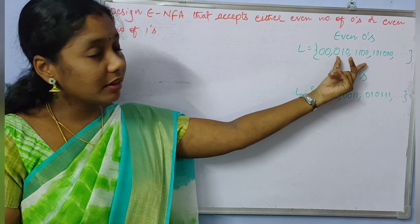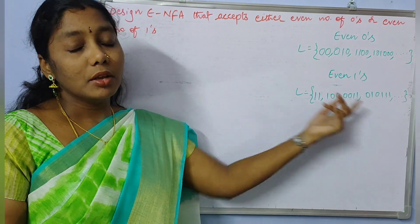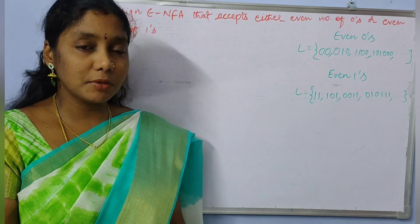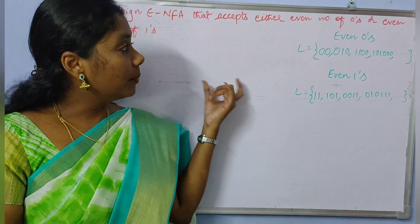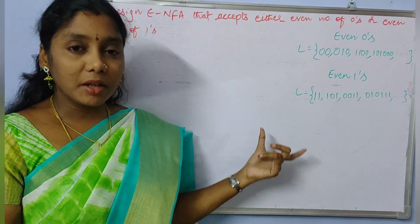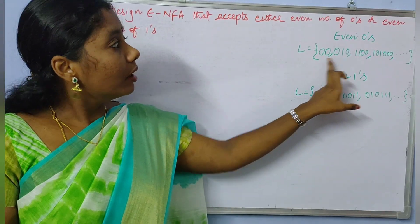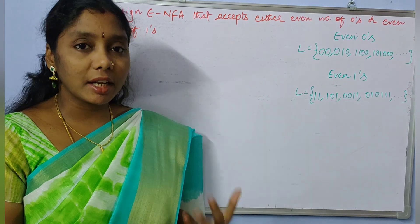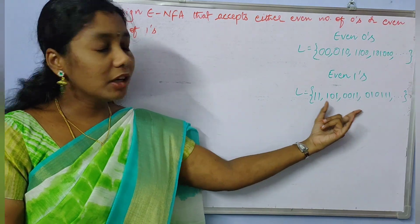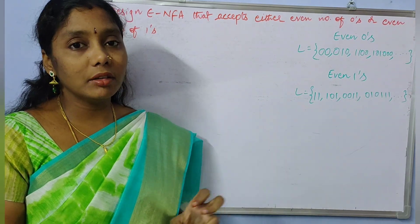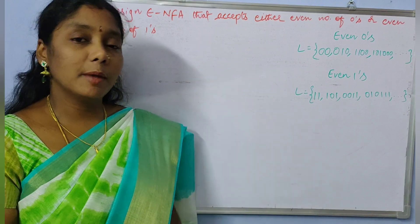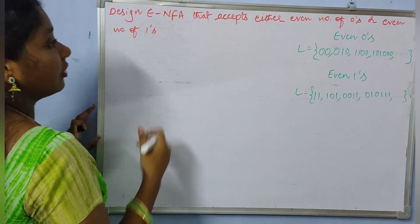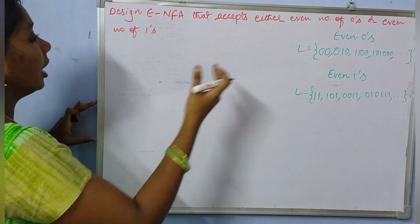For the construction of the epsilon NFA, first we need to construct an NFA for even number of zeros, then we construct the NFA for even number of ones, and later we will join both NFAs using the epsilon property. So we will draw the first NFA for the problem of even number of zeros.